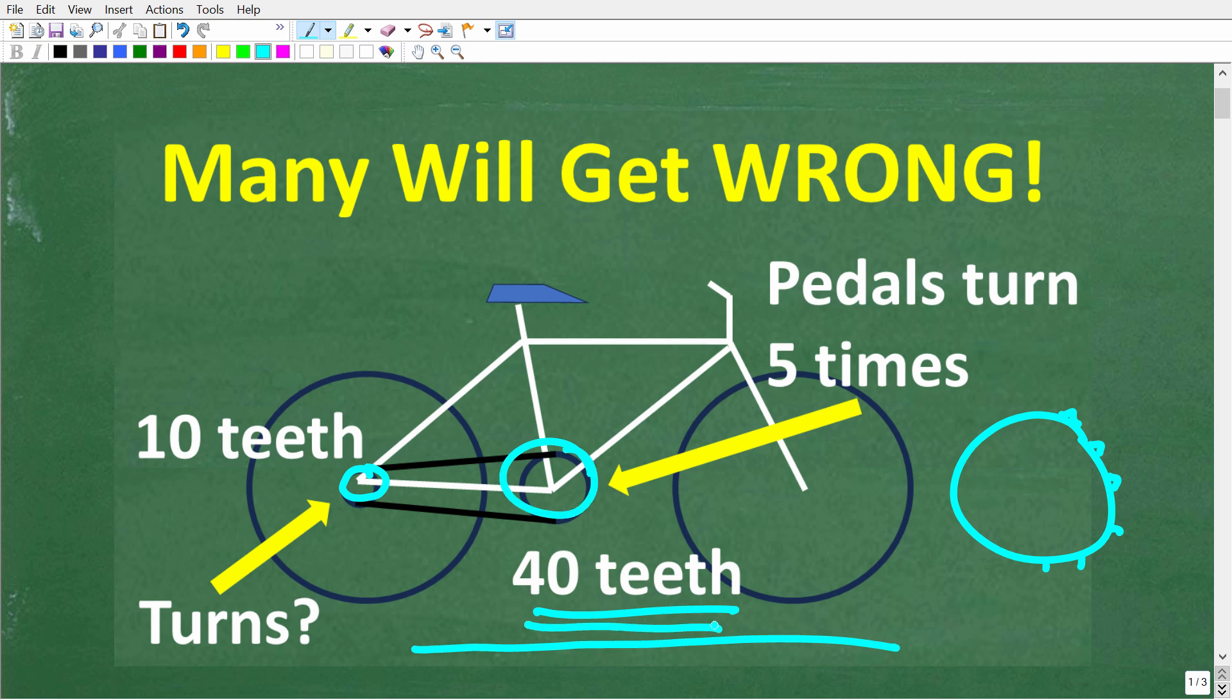But the big gear here has 40 teeth. This small gear in the back has 10 teeth. Now here is the question. If we pedal this big gear five times, in other words we're going to do five rotations here of this big gear, how many times is this small gear right here going to turn? So that is the question.